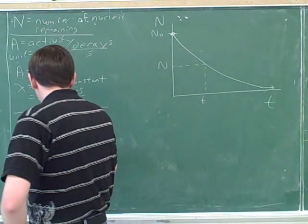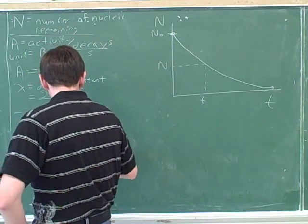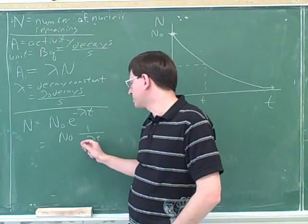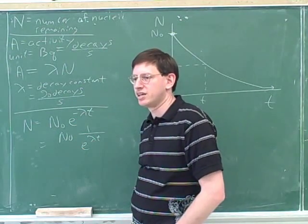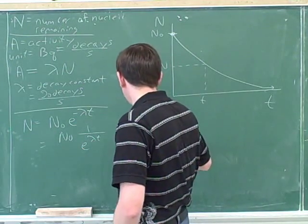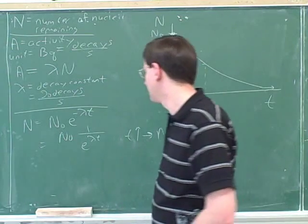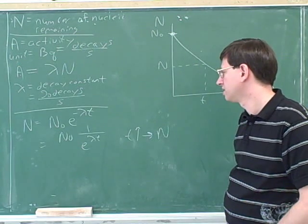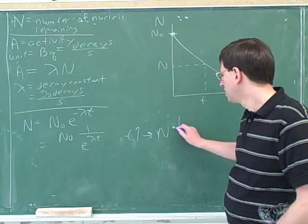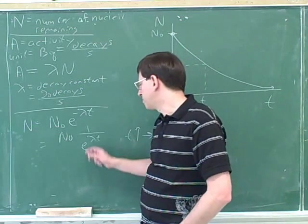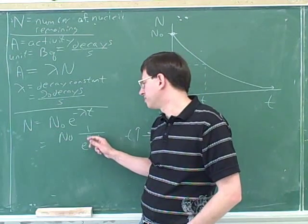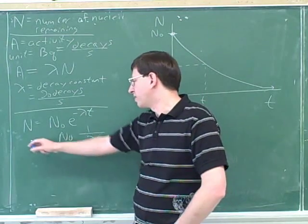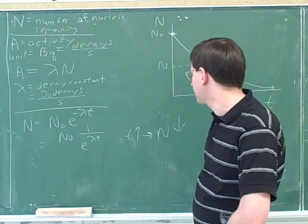By the way, remember another way to write this. A negative exponent means this is really the reciprocal of e to the lambda t. So as t gets bigger, what's happening to N? As t gets bigger, that means that N gets smaller. Because a bigger t gives us a bigger denominator here. And a bigger denominator means a smaller fraction. That means the right-hand side is getting smaller, so the left-hand side gets smaller. That's just our common sense.